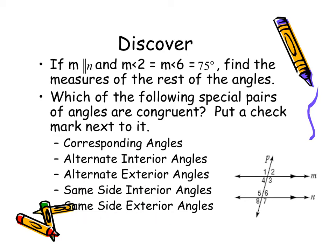If we're given that the measure of angle 6 and the measure of angle 2 are both 75 degrees, we can find out all of our other angles as well. If this is 75, I know this is 105 because those two are supplementary. With angles 2 and 4, I know these are vertical angles, so this will be 75 and this will be 105. You also have vertical angles with 1 and 3.